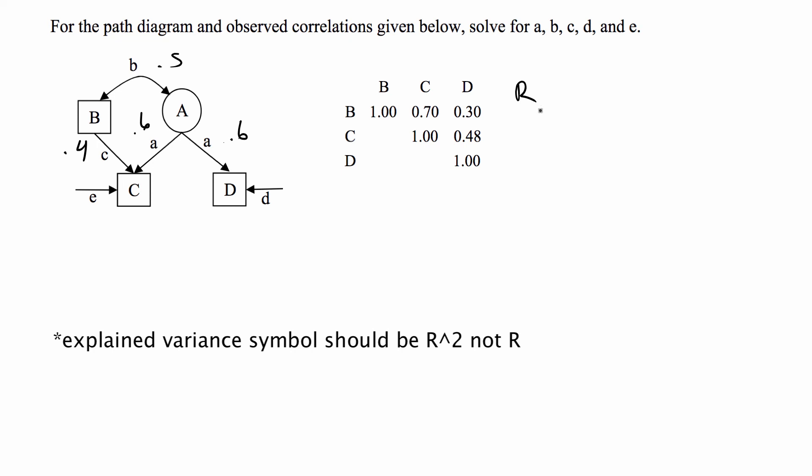And now for the more complicated example, we have the explained variance of C and A,B because A and B are pointing to C, but only A points to D. And this is equal to A times R_A,C plus C times R_B,C. So this is the coefficient C times R_B,C plus the coefficient A times R_A,C.